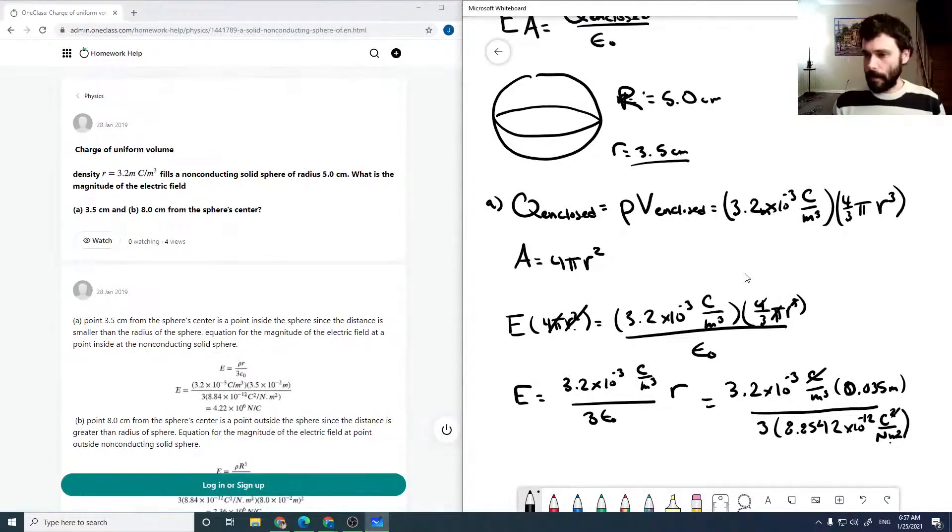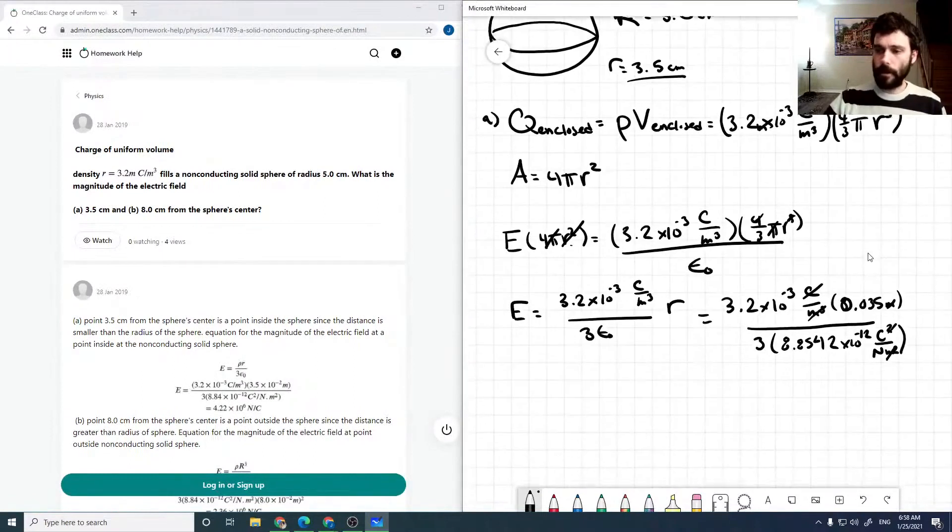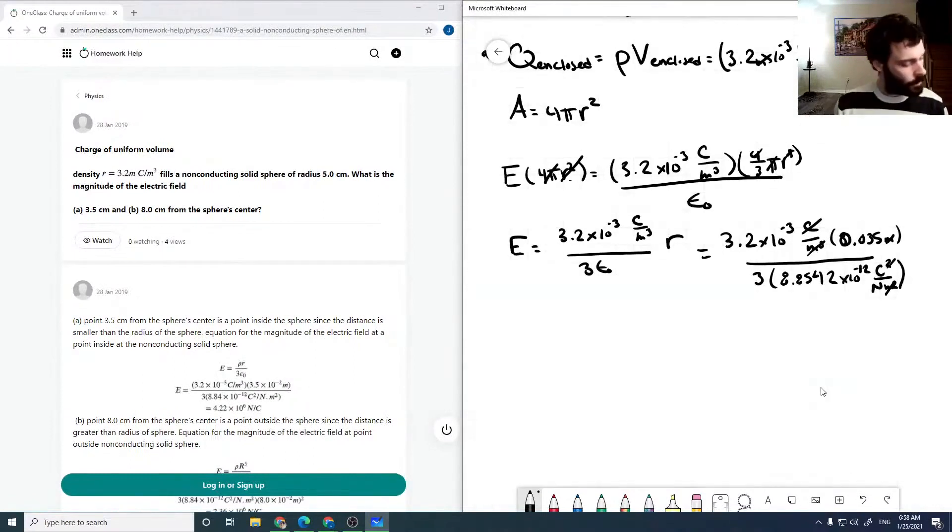Our meters squared will cancel completely, and we'll end up with newtons per coulomb, which is our E field unit. This comes out to be 4.22 times 10 to the 6 newtons per coulomb.